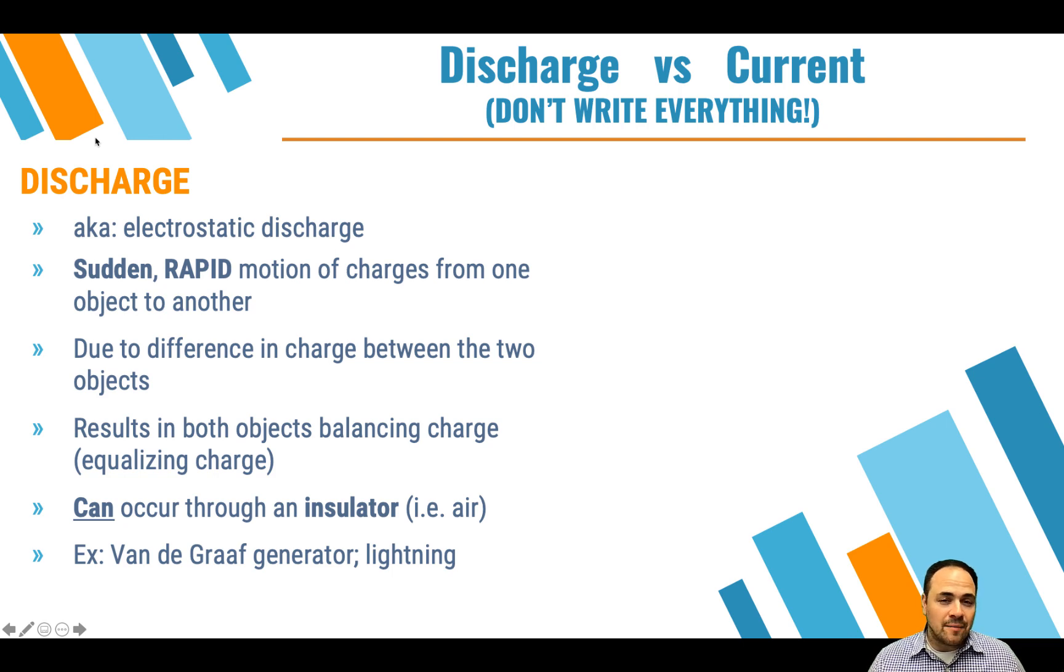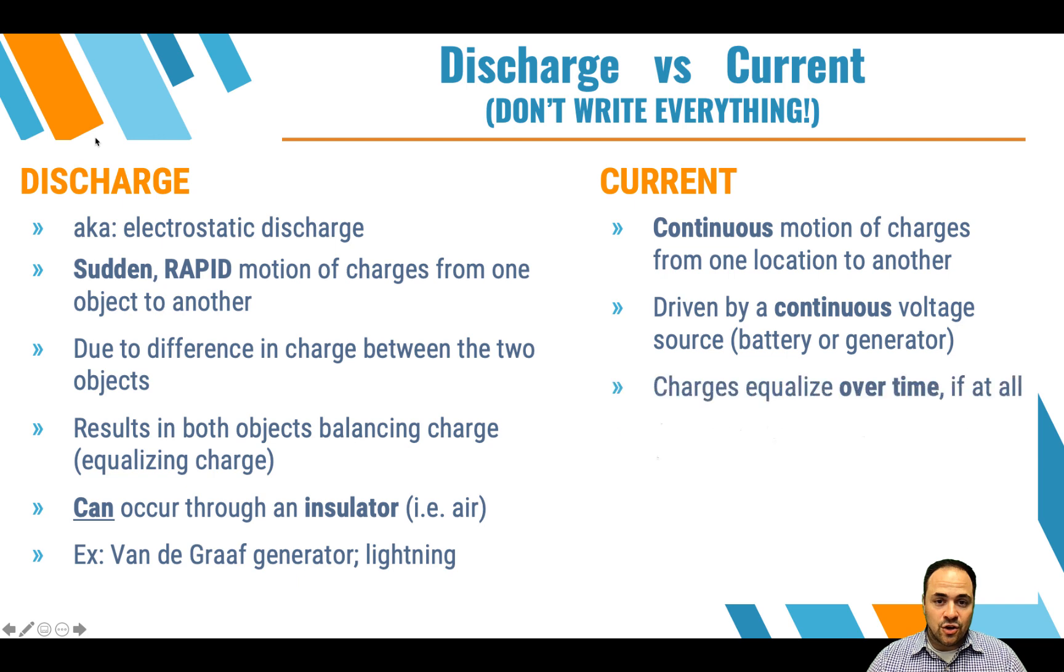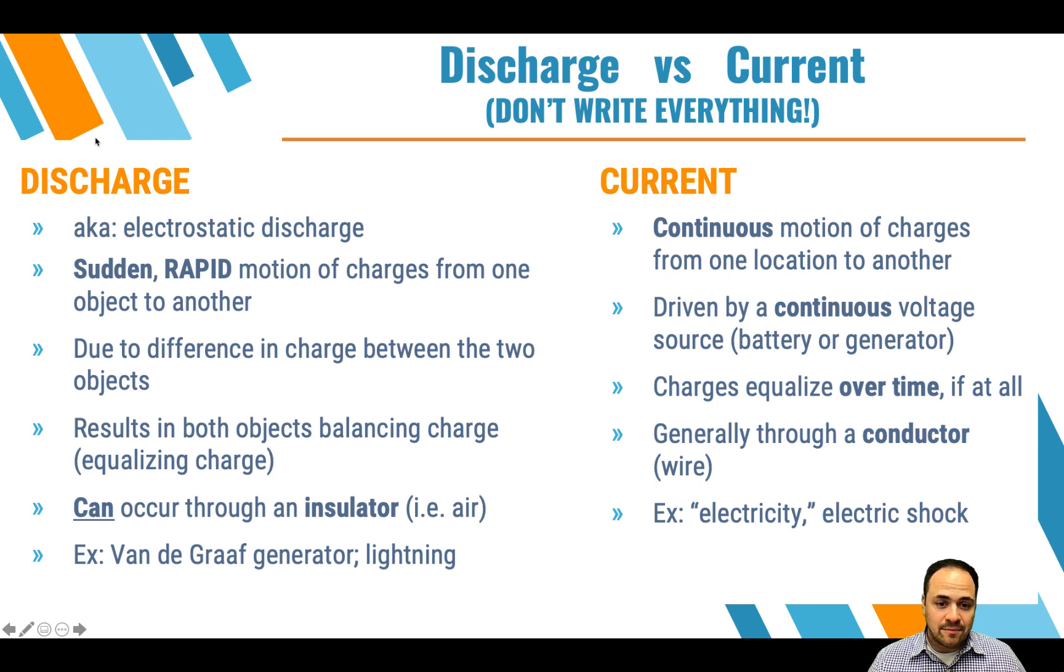And so when we're talking about electric current though, that's referring to more steady continuous flow of charge than just this rapid discharge of charge from one object to another. You need a continuous voltage source for that and that's something we'll talk about later, so don't worry about that yet. And this is generally through a conductor, so something that allows the flow of electrons quite easily. Something like a metal, like copper, that's a really common one. And so this is what we're usually talking about when we say electricity.